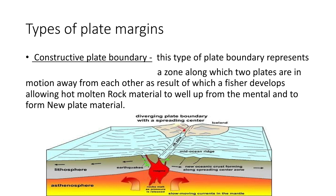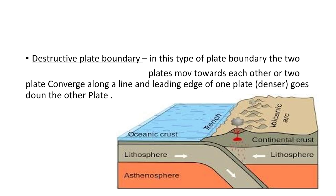Here are two different terminologies. Some many people are concerned that constructive plate boundary, which is known as divergent. Constructive means to construct anything, and here magma is coming up and constructing new crust. That's why it's called constructive plate boundary. And in destructive boundary, two plates are moving towards each other, and two plates converge along a line, and the leading edge of one plate, which is denser, goes down to the other plate.